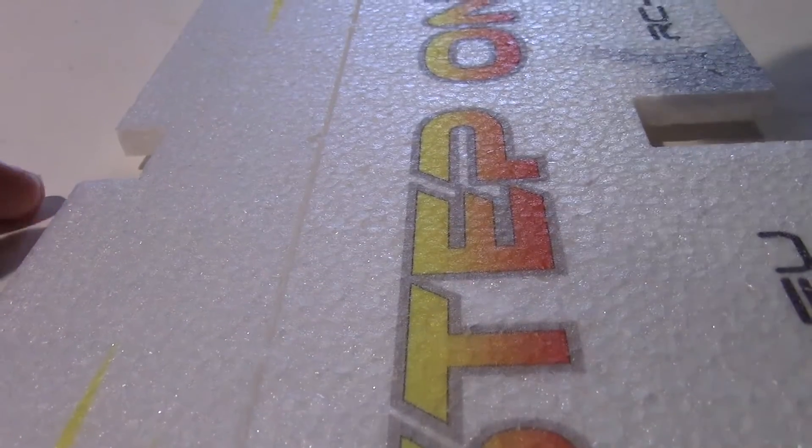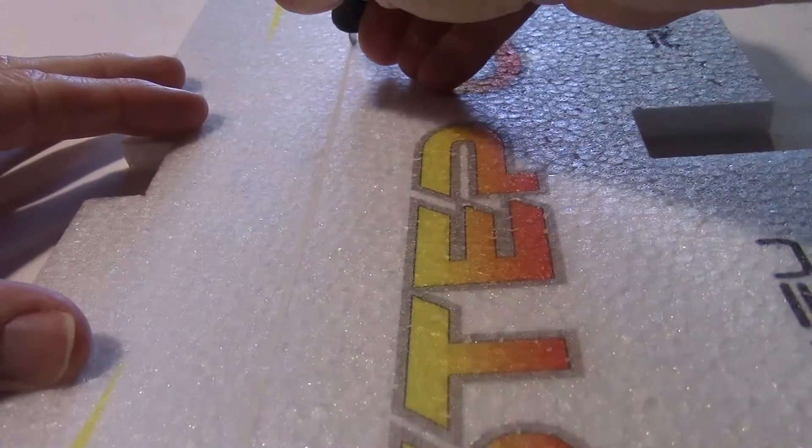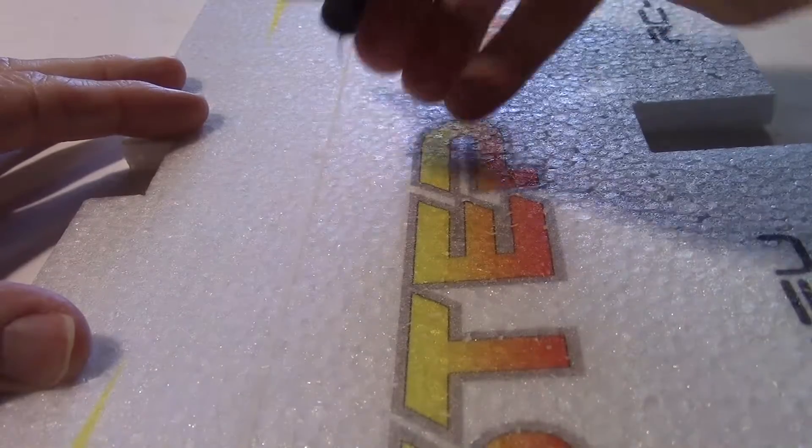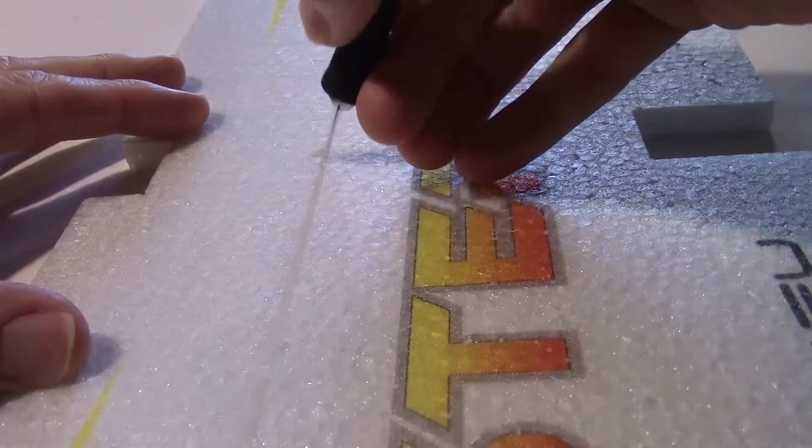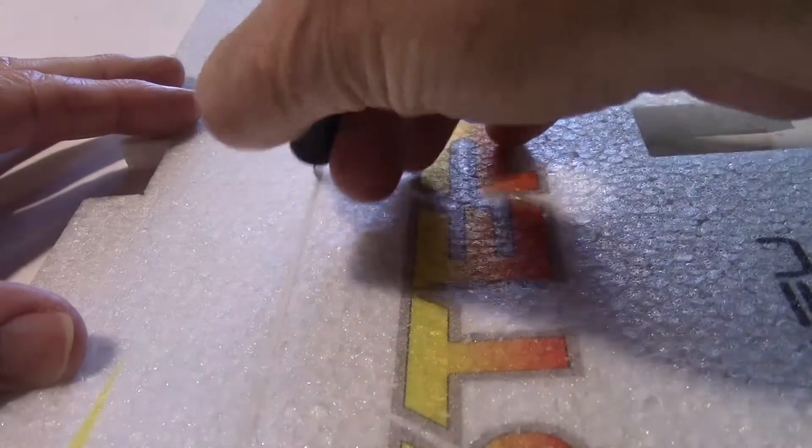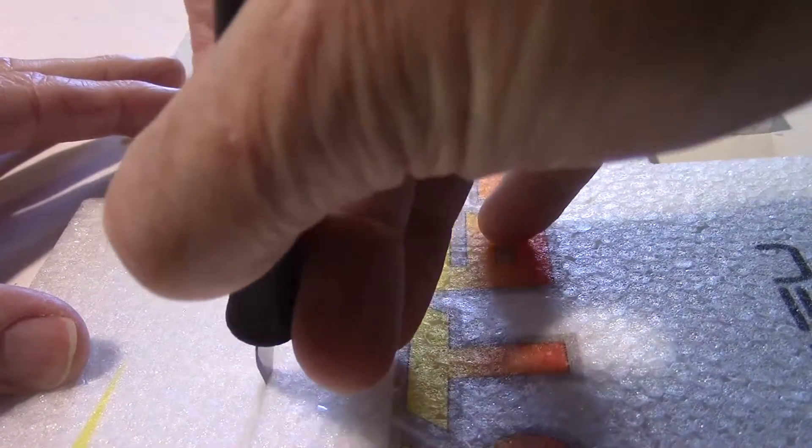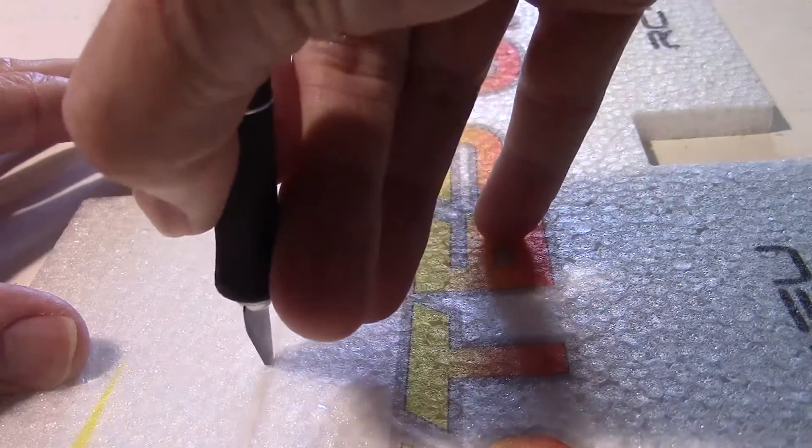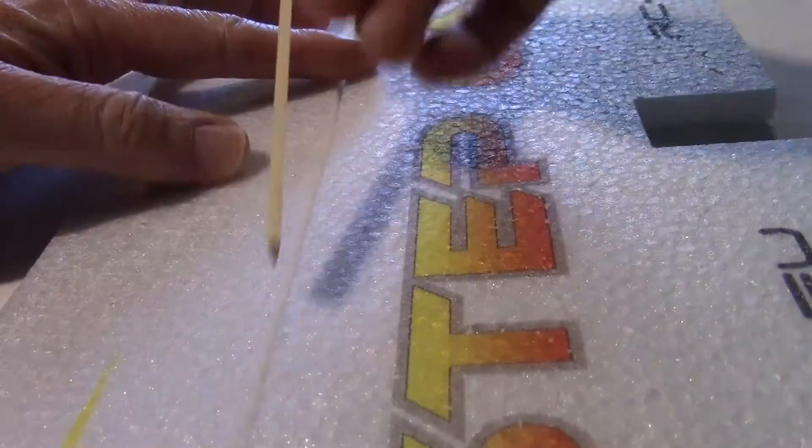There are some tabs in the wing we have to cut with an X-Acto blade first. Just clearing the tab material out of the way.